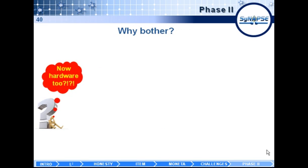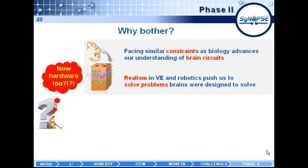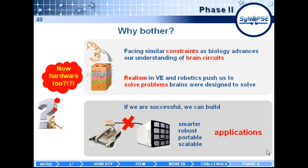Something I would like to address is why we are bothering with this. Modeling was already challenging enough — why dive into a project involving so many complicated hardware-related aspects? We have two main reasons. The first is scientific: we believe that facing similar constraints to biology helps us advance our understanding of brain circuits more efficiently. Adding realism through a virtual or real robotic environment makes us face constraints similar to the biological system we intend to study. The second is applied: most team members want to see these models do something in the real world, and we are convinced that if we succeed, we will build smarter, more robust, more portable, and more scalable applications.